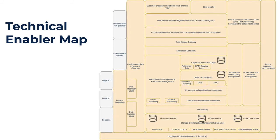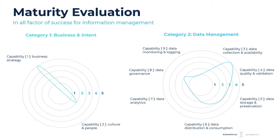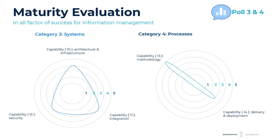To give you a sense of the technical enabler map — it's an exhaustive list of functional roles and technical components you need to put in place to cover the different functions of your system. This is something we built over the last six years by working on different data programs and data transformation programs in different areas. We did the same for information management — not only the technical components for data engineering, but also the data governance components that can be included in the roadmap.